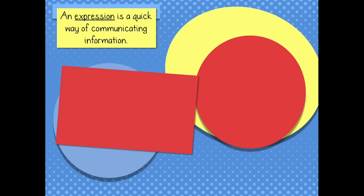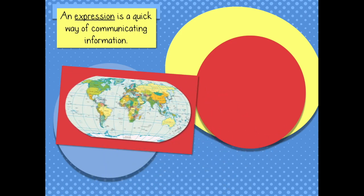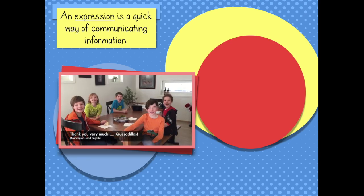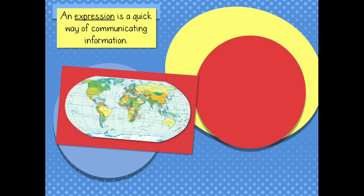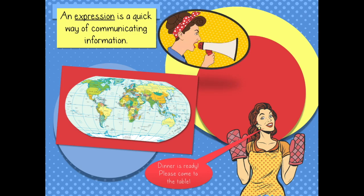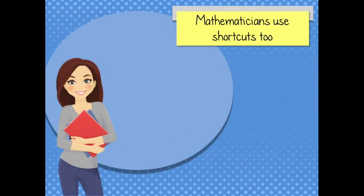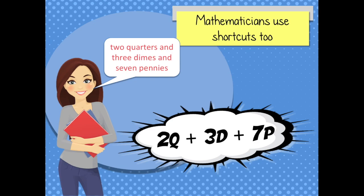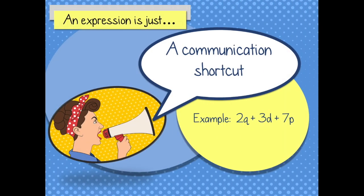An expression is a quick way of communicating information. Cultures around the world use expressions. Now let's bring it closer to home. In the evenings, when I'm finished making a nutritious meal for my family, what I need to communicate is 'dinner is ready, please come to the table.' But what I really end up saying is just 'dinner.' I shorten it to one word, but my family understands. Mathematicians do the same thing — instead of a long series of words, we just use shortcuts. For example, instead of saying two quarters and three dimes and seven pennies, I could just use a shortcut like 2q + 3d + 7p. So an expression is just a communication shortcut, or you could think of it as a mathematical phrase.